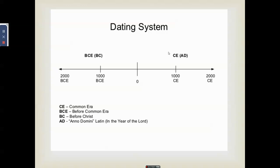BC stands for Before Christ, and BCE stands for Before Common Era. CE is Common Era and AD is Anno Domini, meaning 'in the year of the Lord.' BCE and CE are generally used when not referring to religious topics, while BC and AD are used in religious contexts. The dating system used throughout this topic will mostly be BCE and CE.